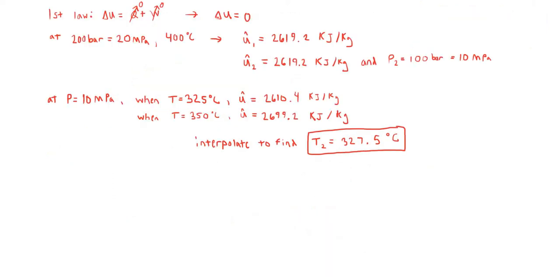Next, we need to find the total volume of the vessel. Because from the problem statement we know the total mass of steam, and from the steam tables we can find the specific volume of the steam in its final state, we can use the equation V = m·v to calculate the total volume of the vessel. Now that we know the final temperature, we're going to interpolate between the two values of specific volume and plug it into this equation to get the volume of the vessel.